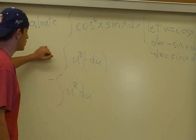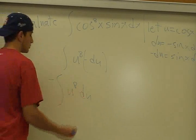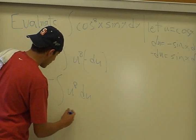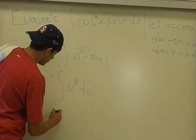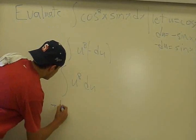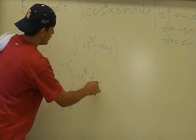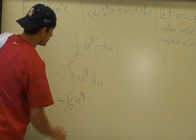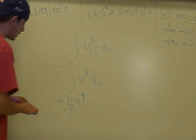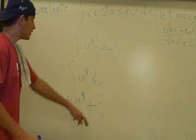So now we are ready to take the anti-derivative, which makes it a lot easier when you just have one term. So it will be negative one ninth u to the ninth. And then du would simply go away. And then you add the c as always with integrations, you have to add the c.